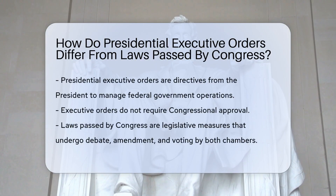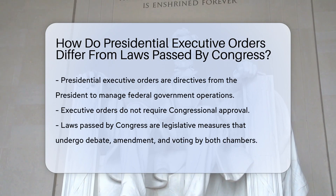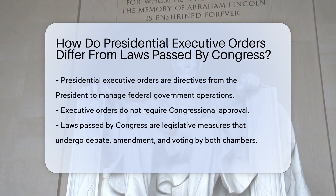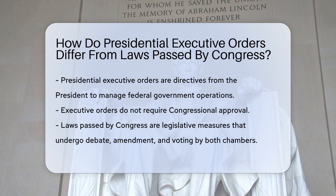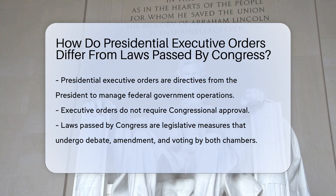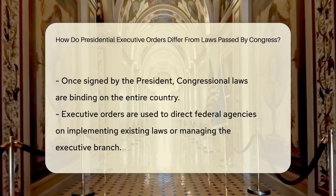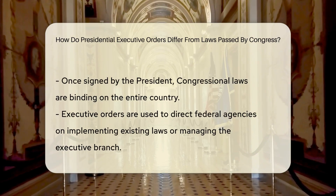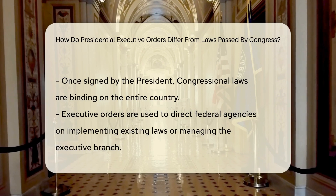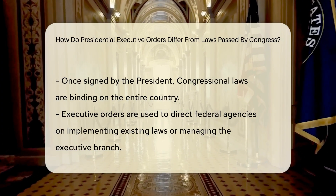Presidential executive orders are directives issued by the president to manage the operations of the federal government. They do not require congressional approval to be implemented. In contrast, laws passed by Congress are legislative measures that have gone through the entire legislative process, including debate, amendment, and voting by both chambers of Congress.